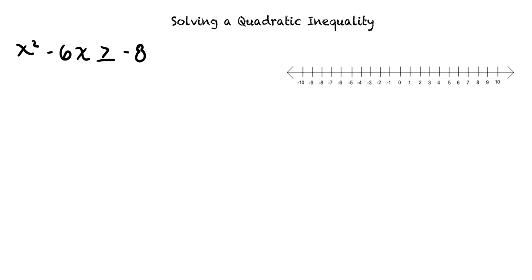How do we start these types of problems? First, we'll rewrite the inequality so that one side contains only 0 and the coefficient of the x² term is positive. Our inequality now looks like this: x² - 6x + 8 ≥ 0.